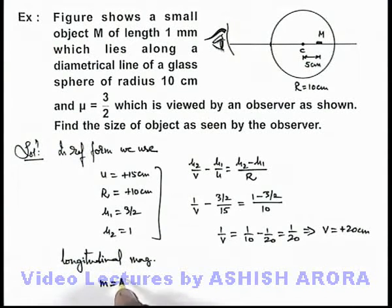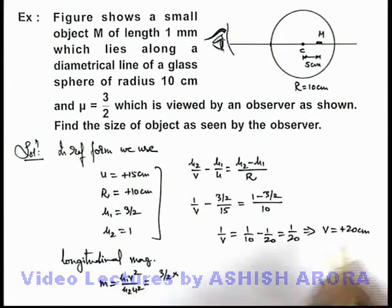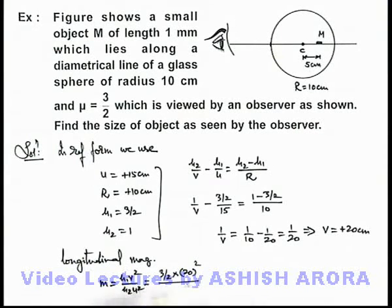Which is given as m = μ₁v²/μ₂u². On substituting the values, this will be 3/2 multiplied by v squared, v squared is 20 squared, divided by μ₂, this 1, multiplied by the object distance 15 squared.